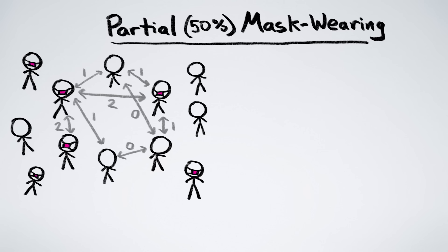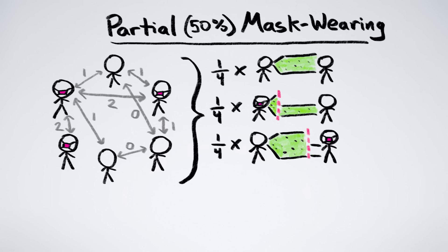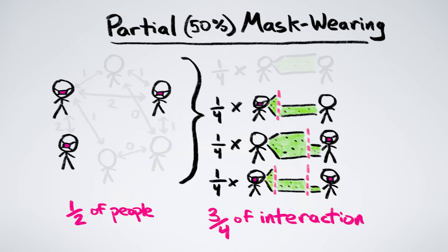But if 50% of people wear masks, then on average, assuming that people interact randomly, a quarter of all interactions will involve no masks, a quarter will have the contagious person masked, a quarter will have the susceptible person masked, and a quarter will have two masks. So even when just half of people wear masks, three quarters of interactions involve masks, and a significant portion of those involve two masks. Do you see the magic math of masks yet?